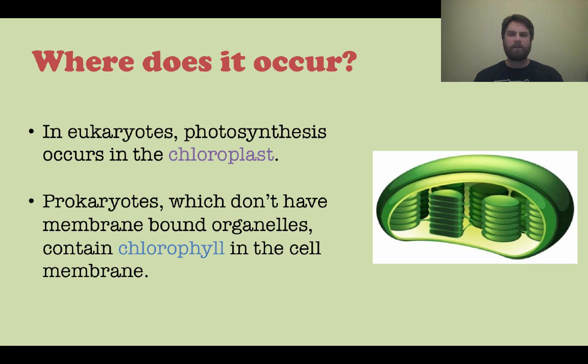Where does photosynthesis occur? This is very important. In eukaryotes, photosynthesis occurs in the chloroplasts, which is pictured on the right there, because eukaryotes have membrane-bound organelles. Prokaryotes do not have membrane-bound organelles, so they contain the enzyme chlorophyll in their cell membrane. It's very important that you realize that chlorophyll is the enzyme that helps trap sunlight and it is present in both eukaryotes and prokaryotes. The chlorophyll is inside the chloroplast if you're talking about a eukaryote, and inside the cell membrane if you're talking about prokaryotes.